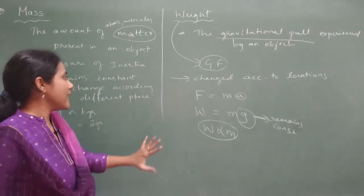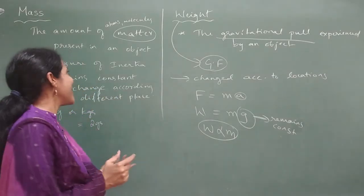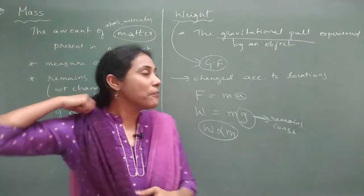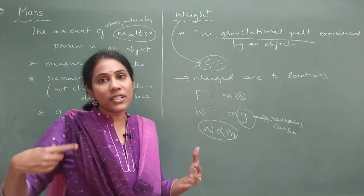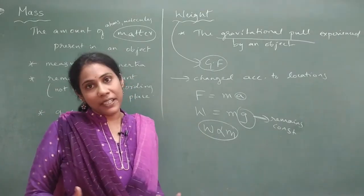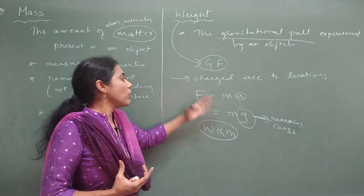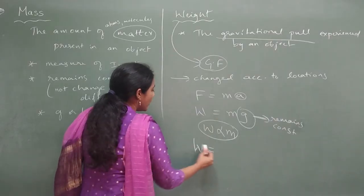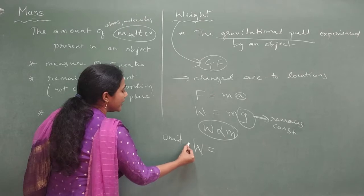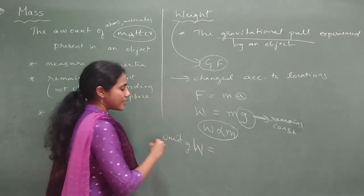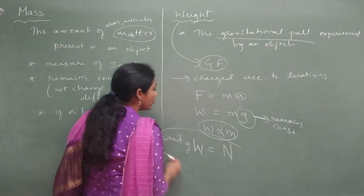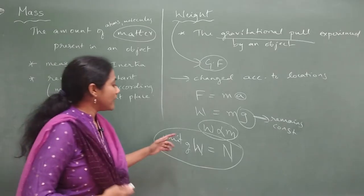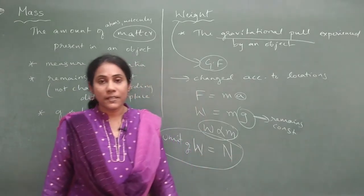So this is not a slight difference — it's a huge difference between mass and weight. Mass is just the amount of matter with which an object is made up of, and weight is nothing but the gravitational force that an object experiences. That gravitational force itself we are calling weight. Now, weight is nothing but a force. So the unit of weight is Newton. And the unit of mass is grams or kilograms. But weight can always be measured in Newtons.